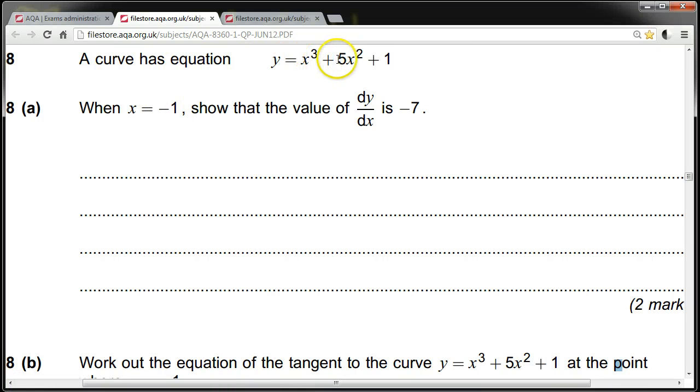A curve has equation y equals x cubed plus 5x squared plus 1. When x equals minus 1, show that the value of dy/dx is minus 7.